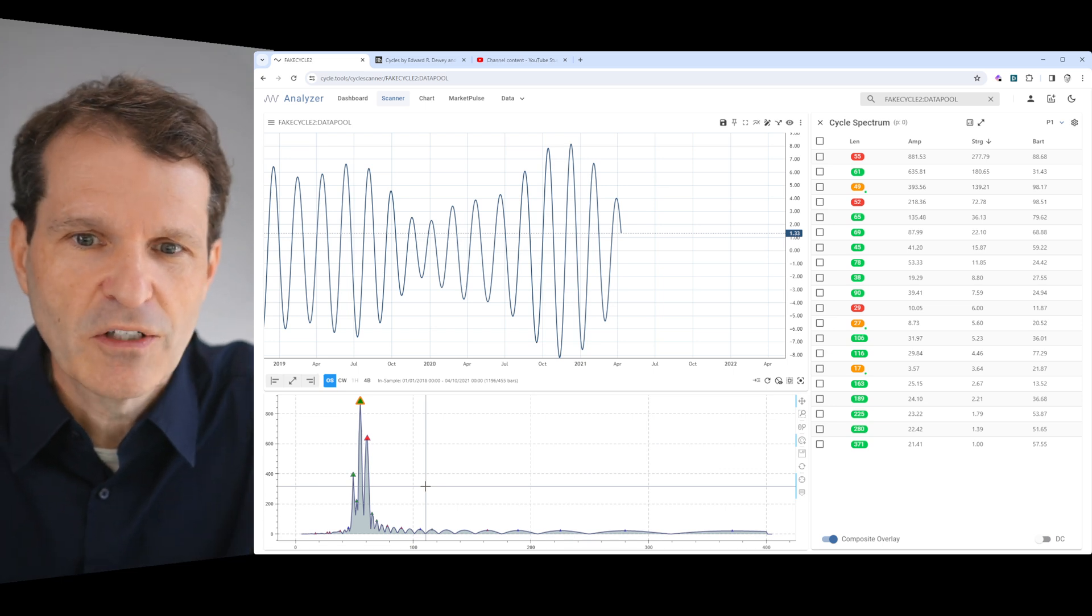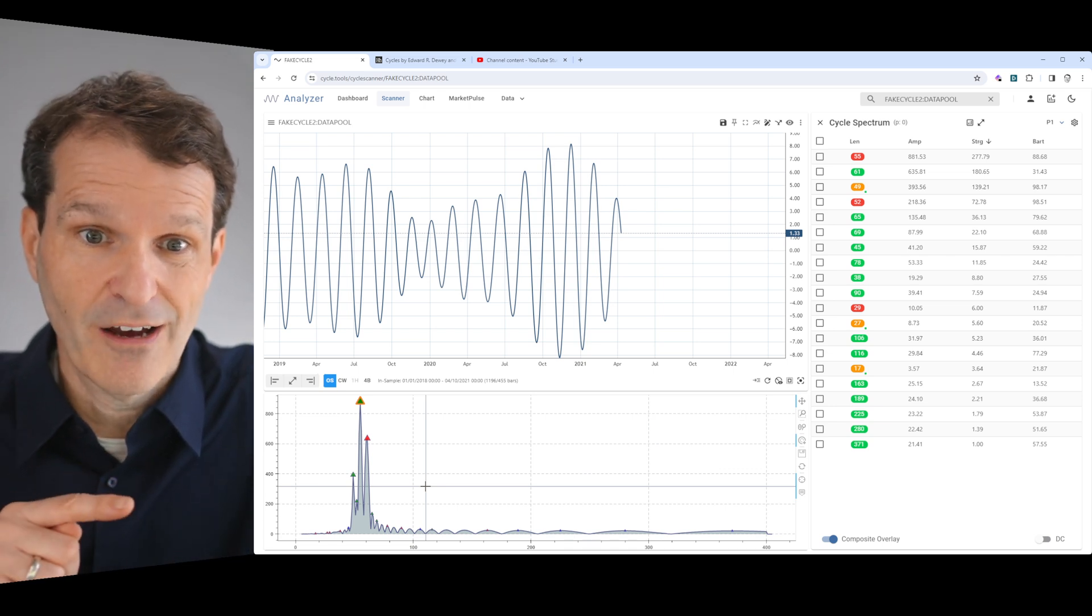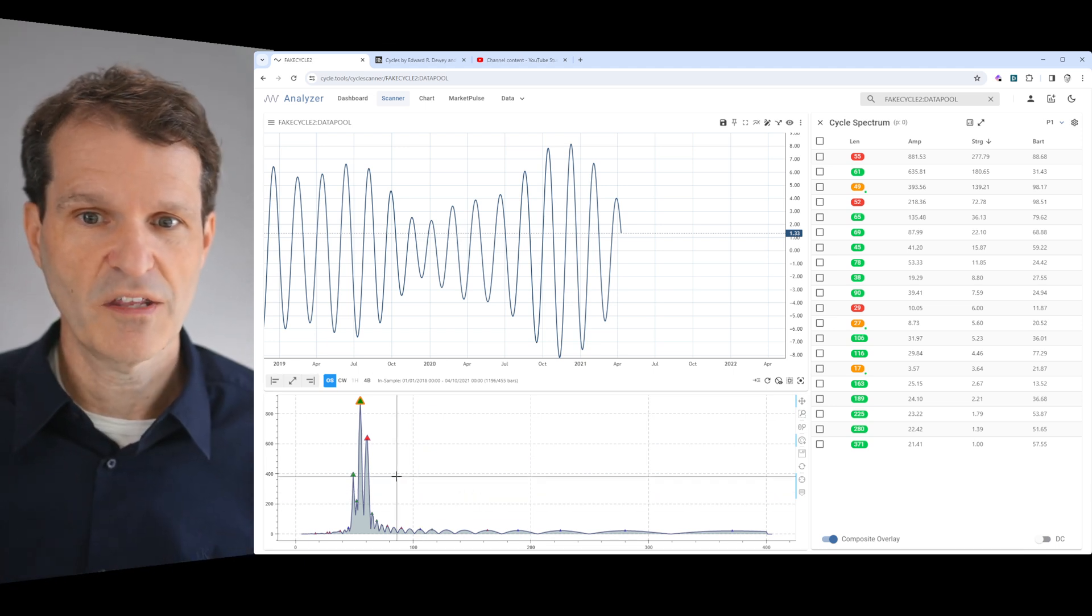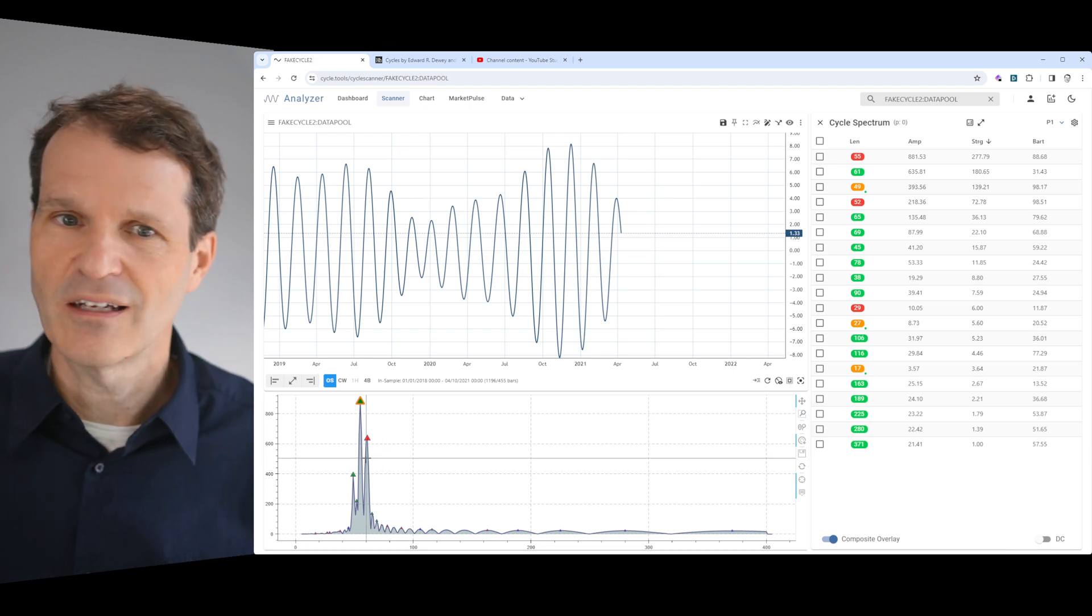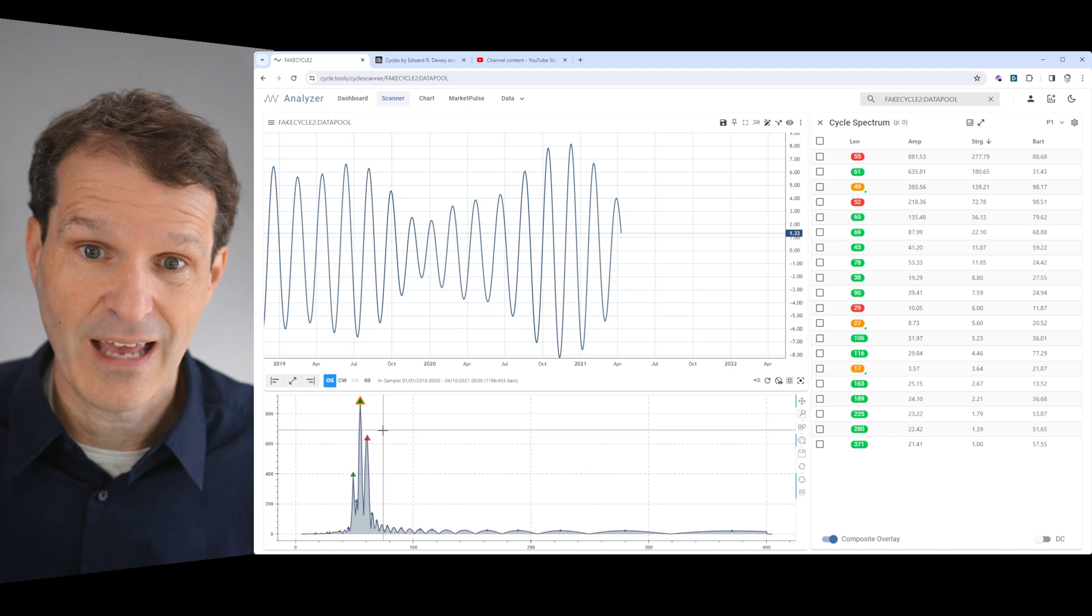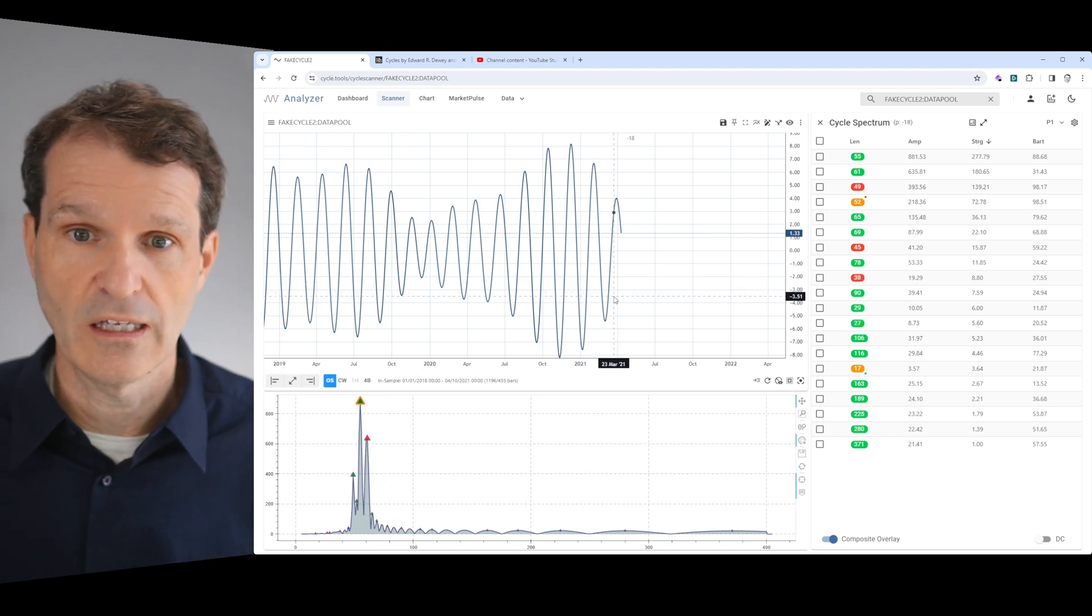If you put just a simplistic Fourier analysis with not enough data, it will show you just one peak in the spectrum. But if you do it the right way with the right amount of data, you see that we now uncover there is not one cycle—there are three cycles active in the data set.